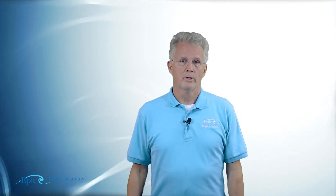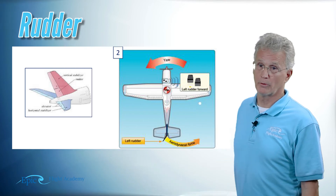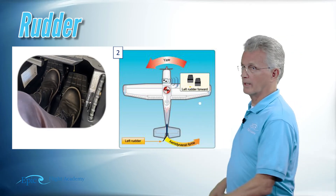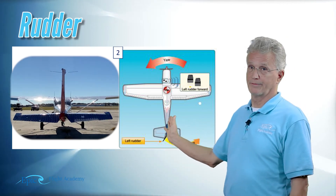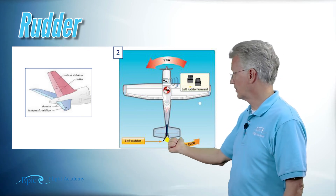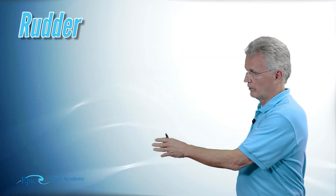So far we've looked at ailerons and elevators. Our third primary flight control is the rudder. The rudder yaws the airplane around the vertical axis. Looking at the aircraft from the top, you can see the rudder pedals. As a pilot, if you put your left foot forward on the left rudder pedal, you are moving the physical rudder to the left. The relative wind hits the tail, pushing the tail of the airplane to the right — and from the pilot's perspective, the nose of the airplane yaws to the left.